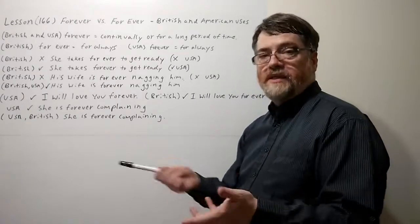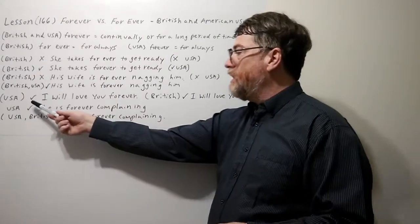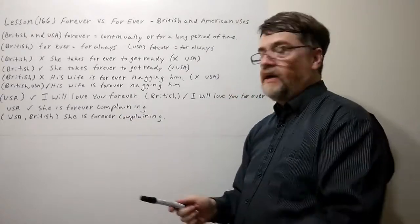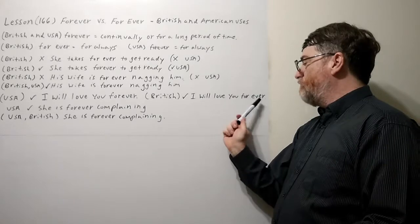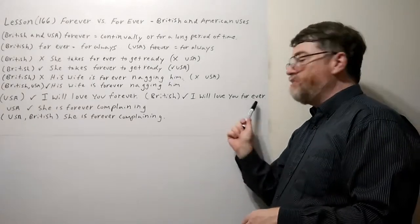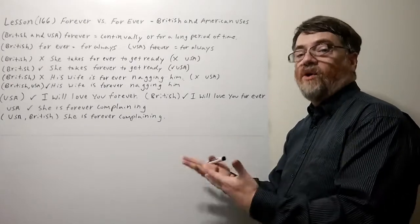Okay, and let's continue. Let's look at the example. Of course in American English, if you say I will love you forever, it's just one word. But here in British English, if I say I will love you forever meaning, you know, forever and ever, never ending, then it should be two words meaning for always.